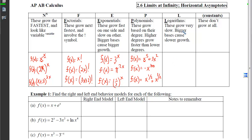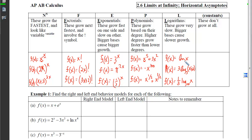Logarithms grow really slowly — slower than everything else. Bigger bases cause slower growth. So a natural log (base e ≈ 2.7) grows faster than log base 5. Finally, constants don't grow at all — they're flat. So the hierarchy from slowest to fastest is: constants, logs, polynomials, exponentials, factorials, and N-to-the-N functions.